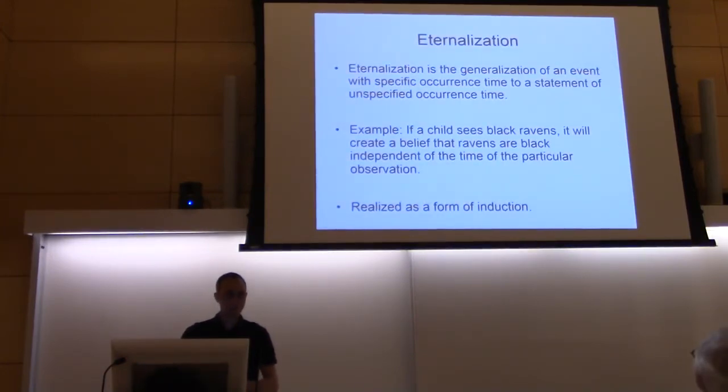A second mechanism is the eternalization. It's generalizing an event which has a specific occurrence time so that it will be a statement with an unspecific occurrence time. Here's one example: If a child sees black ravens, at some point it will begin to believe that ravens are black, not only in the times where it saw it, but also in general that ravens are black. So it creates this abstraction, this generalization, and this is basically a form of induction in the system.